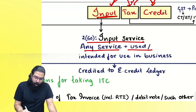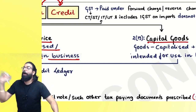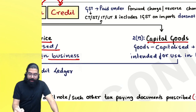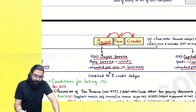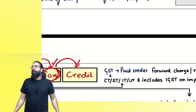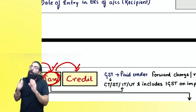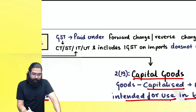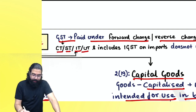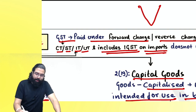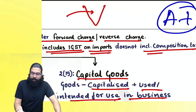Capital goods are those which you have capitalized — taken to the balance sheet — used or intended to be used in the business. Tax means whatever GST you have paid on that, whether the supplier paid it to the government (forward charge) or you paid it under RCM (reverse charge). This includes CGST, SGST, IGST, UTGST, and also IGST on imports when you import goods.